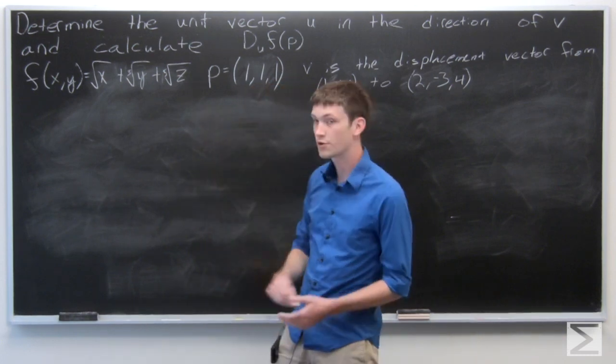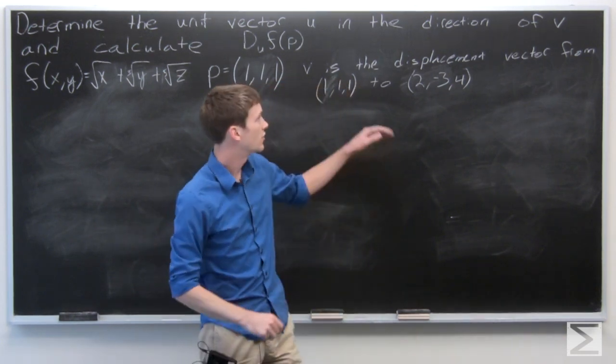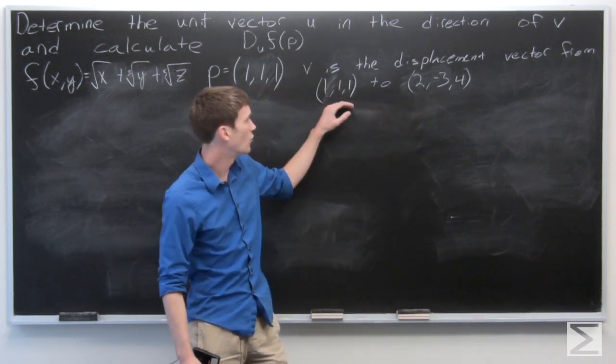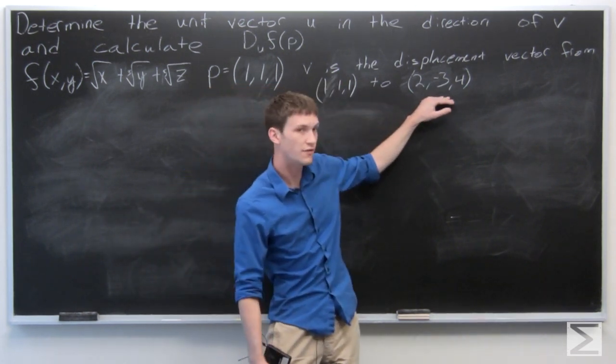In this problem, we're asked to determine the unit vector u in the direction of v, where v is the displacement vector from (1,1,1) to (2,-3,4).